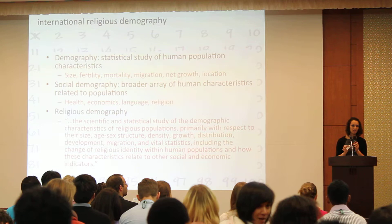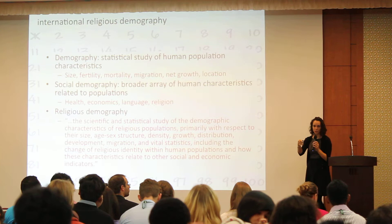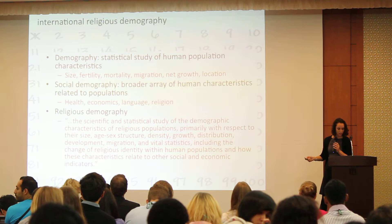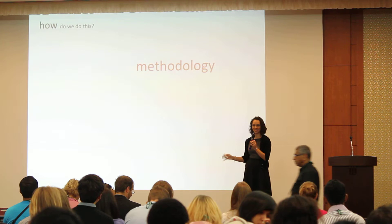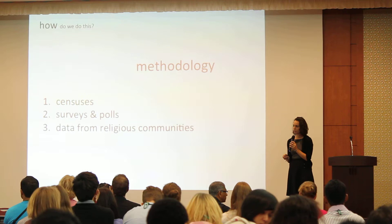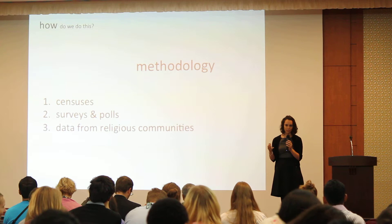One important thing to realize is that we track affiliation, not beliefs or practices. We're not as concerned with what people necessarily believe or do — we're concerned about where they are affiliated. We are a social science research center in that regard. The three primary sources of demographic data are censuses, surveys and polls, and data from religious communities themselves.